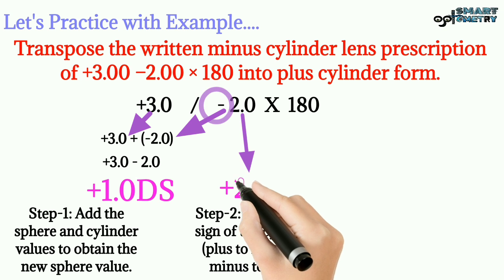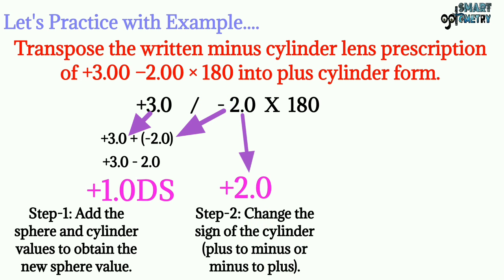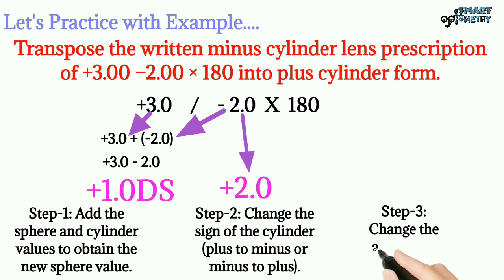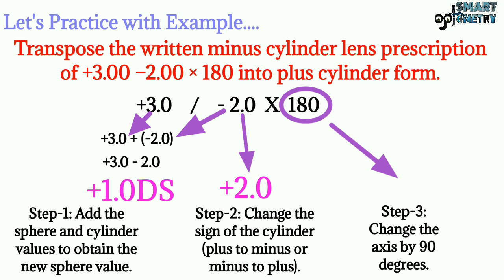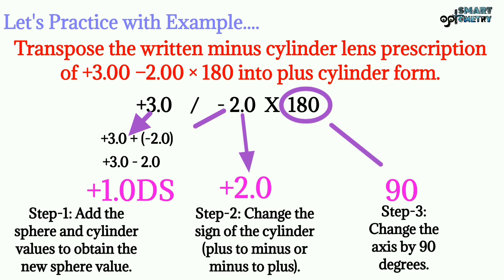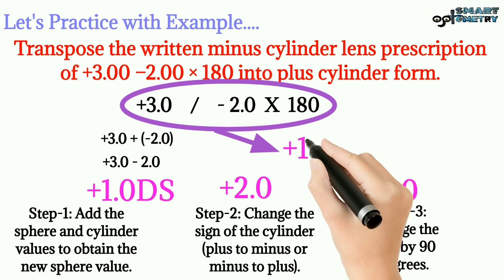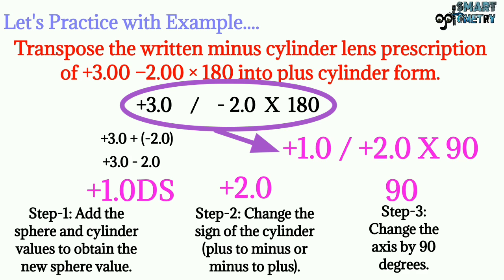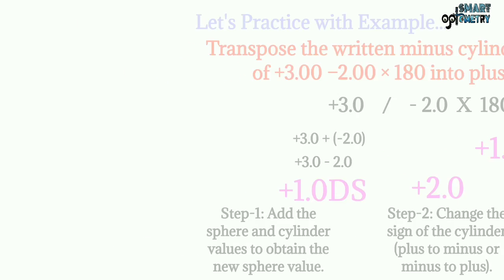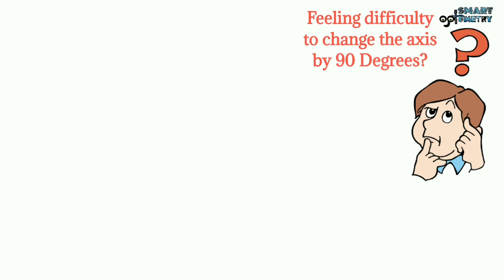So our new cylinder value will be plus two. Now step three: change the axis by 90 degrees. Here our axis is 180, so our new axis will be 90 degrees. So the final power after transposition will be plus one with plus two cylinder at 90 degree axis.